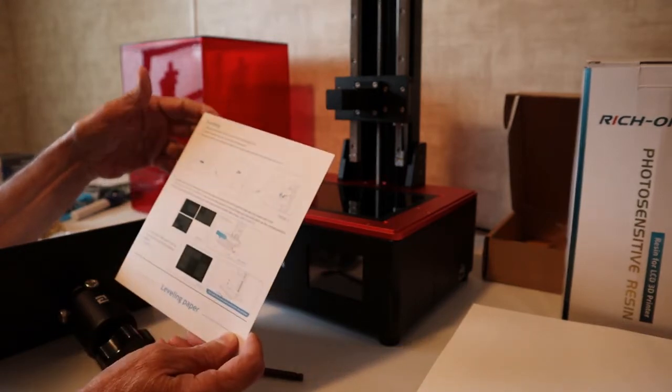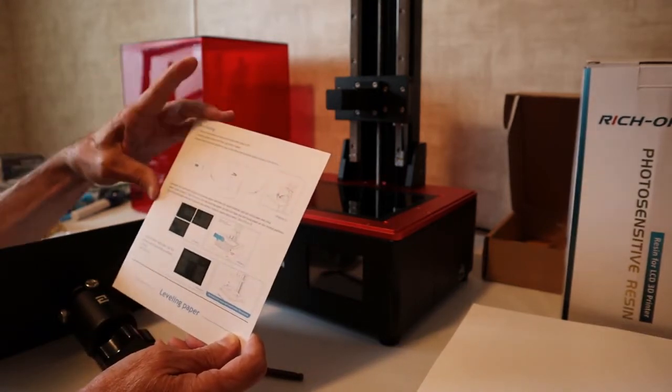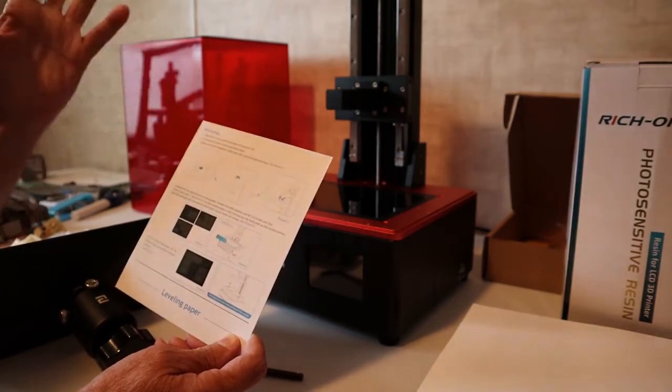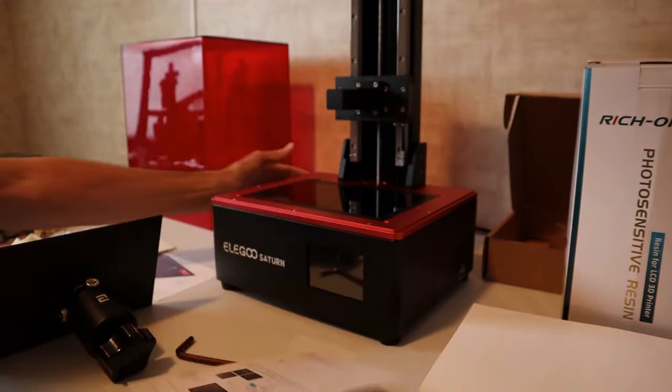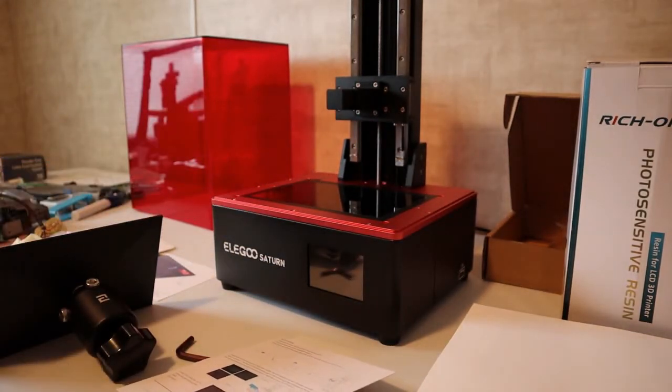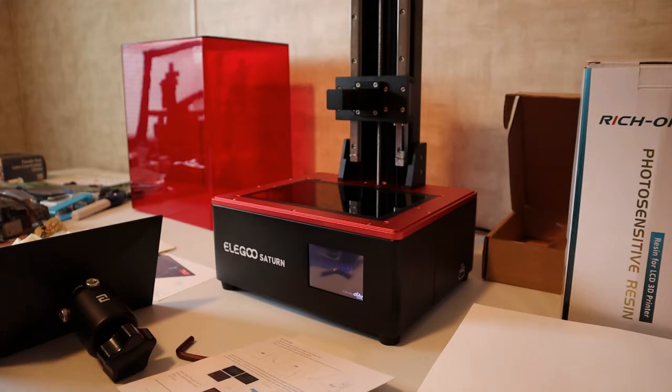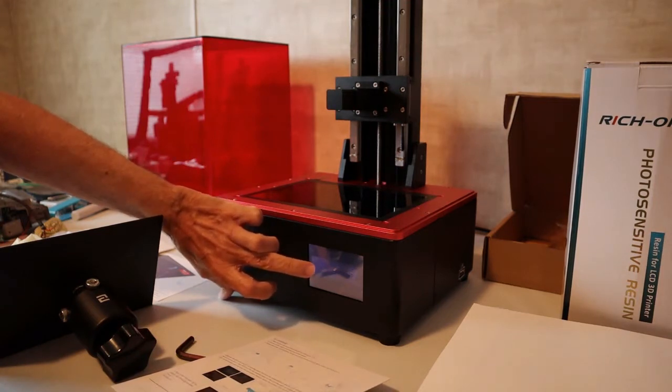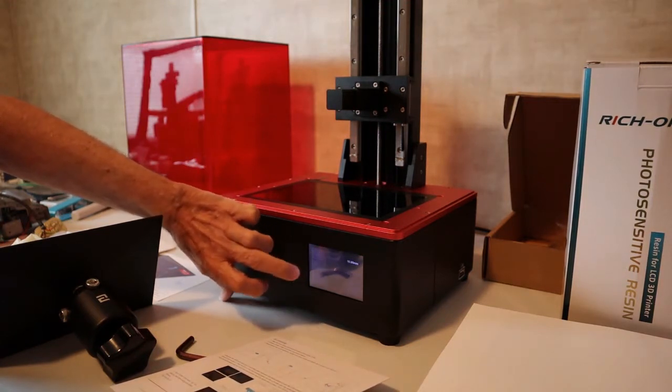So I just wanted to show you what I do for my alignment, and hopefully it's useful to some of you. So what we're going to do is turn the printer on, and we're going to hit the tool icon, and then we're going to go to manual.